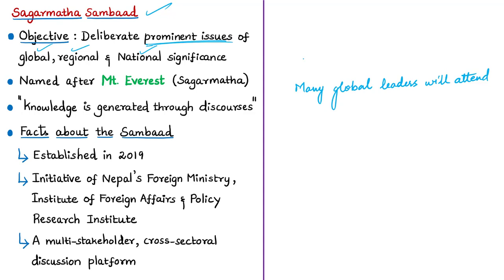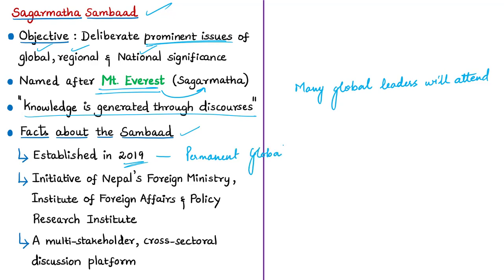This dialogue is named after Mount Everest, which is also known as Sagar Mata — the world's tallest mountain. Mount Everest symbolises friendship and promotes the notions of common good and collective well-being of humanity. The dialogue is based on the idea that knowledge is generated through discourses, meaning the most challenging issues faced by global humanity can be addressed through debates. The Sagar Mata Sambad was established in 2019 as a permanent global forum headquartered in Kathmandu, as a joint collaborative initiative of Nepal's Ministry of Foreign Affairs and the Policy Research Institute.